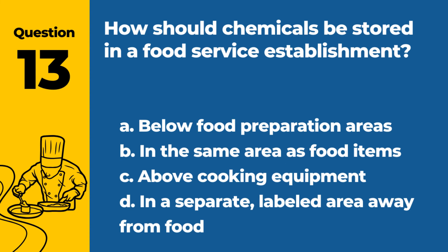Question 13. How should chemicals be stored in a food service establishment? a. Below food preparation areas. b. In the same area as food items. c. Above cooking equipment. d. In a separate labeled area away from food. Answer: d. In a separate labeled area away from food. Chemicals should be stored in a separate labeled area away from food to prevent contamination.